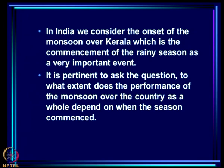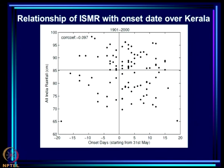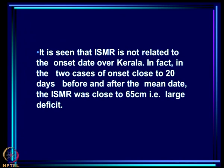When we consider the onset of monsoon over Kerala — the commencement of the rainy season — as a very important event, the pertinent question is: to what extent does the performance of the monsoon over the country as a whole depend on when the season commences? There is actually very little relation between ISMR (all-India summer monsoon rainfall) and the onset date. The correlation is −0.097, close to −0.1 — some slight negative correlation suggesting late onset gives less rain, but explaining hardly any variance.